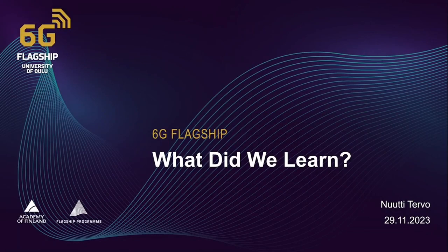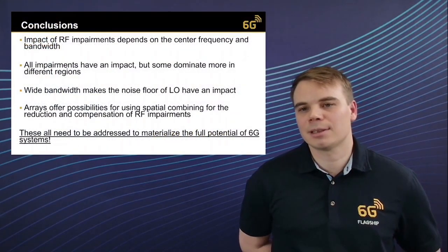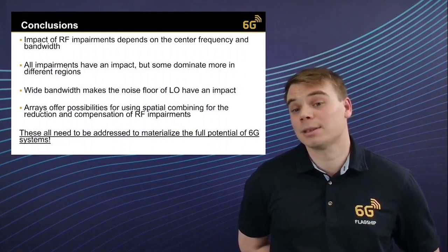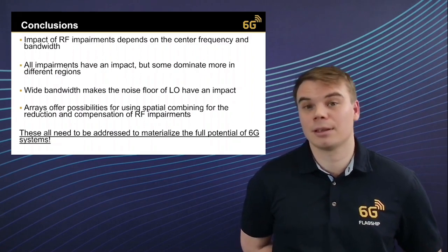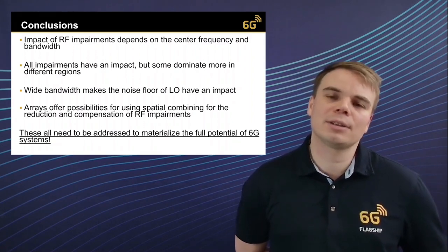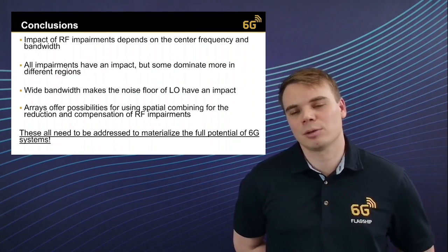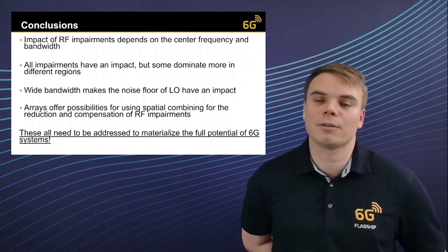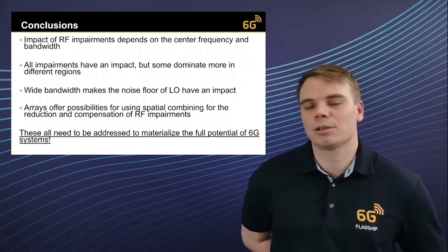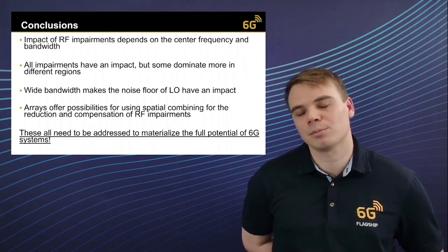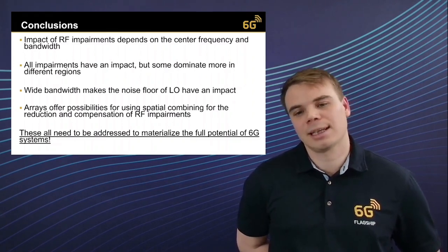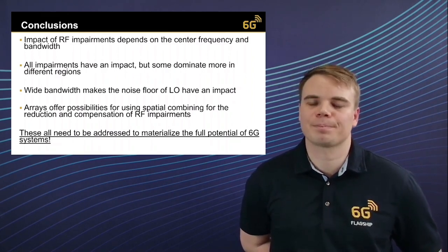To summarize what we learned: the impact of RF impairments depends on center frequency and bandwidth, and all impairments have impact but dominate performance in different power level regions. Phase noise is an important impairment in 6G systems and dominates performance of very wideband systems. Using arrays offers possibilities for compensation of RF impairments, as illustrated with the nonlinear distortion example. To conclude, all these RF impairments must be addressed to materialize the full potential of 6G systems and optimize signal quality. Thank you for listening.